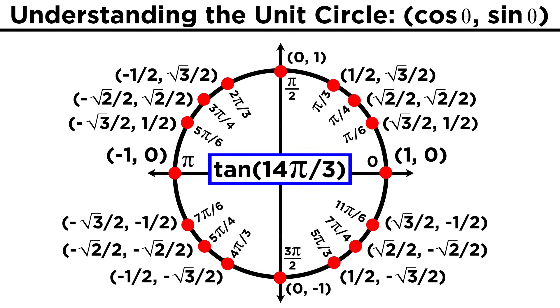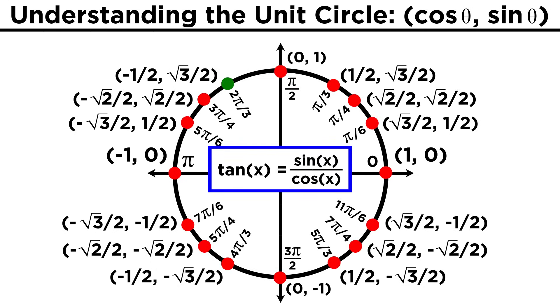Take something like the tangent of 14π/3. Twelve-thirds π is the same as 4π, and that's twice all the way around, so we can subtract that from the angle to get 2π/3. That gets us right here. Now tangent is sine over cosine, so let's take the y-value of this point, and divide by the x-value of this point. And that gives us negative √3.